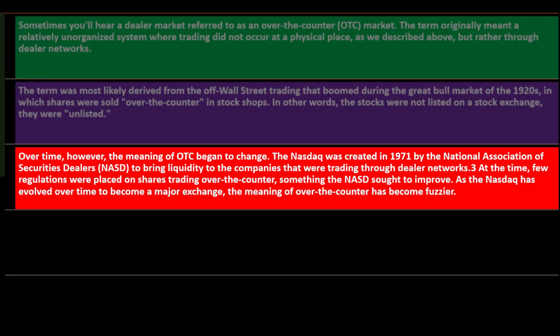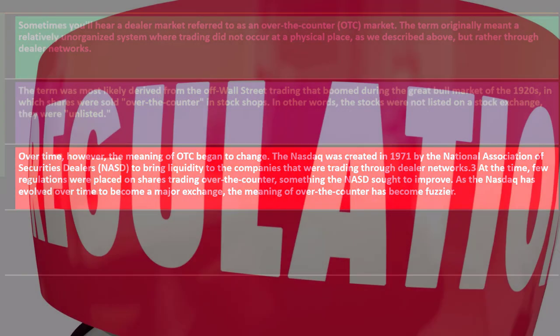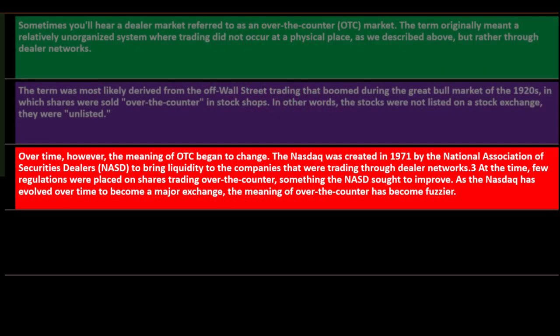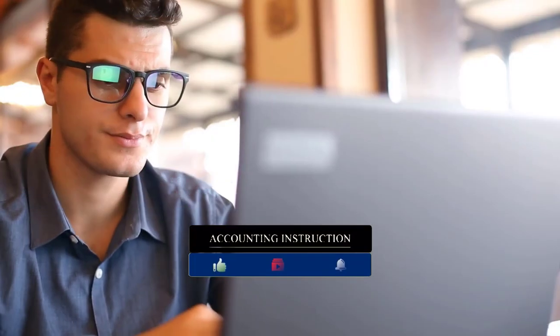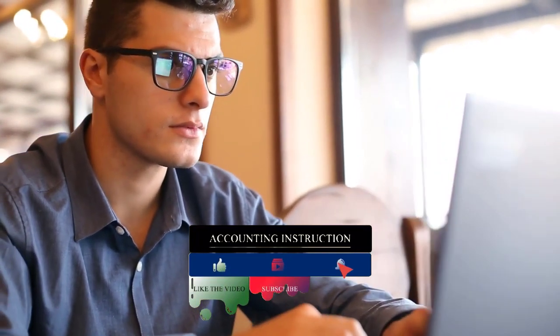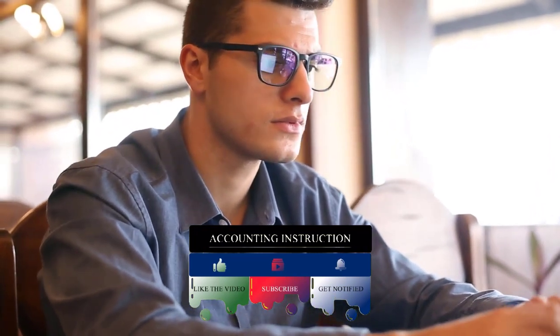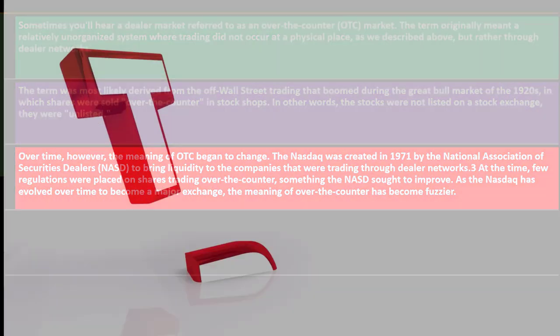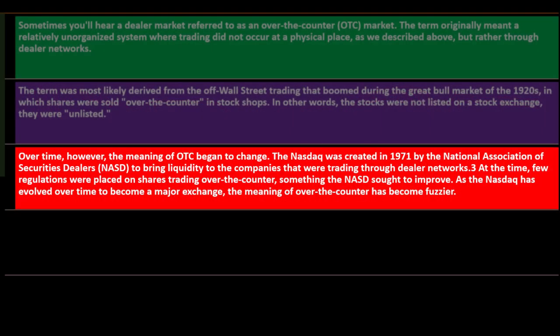The NASDAQ was created in 1971 by the National Association of Securities Dealers (NASD) to bring liquidity to the companies that were trading through the dealer network at the time. Few regulations were placed on shares trading over the counter — something the NASD sought to improve. There's always a delicate balance between necessary regulations and excessive regulations. Self-regulation within a market can be good for maintaining ethics and trust, because no transactions can happen if there's no trust.